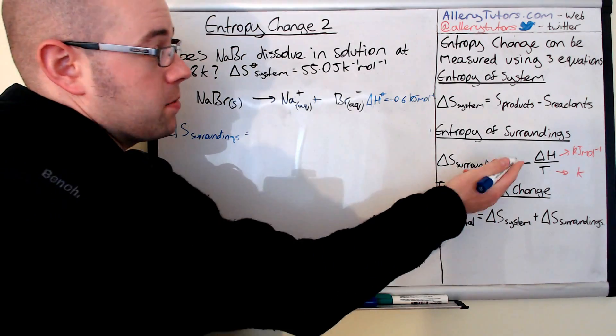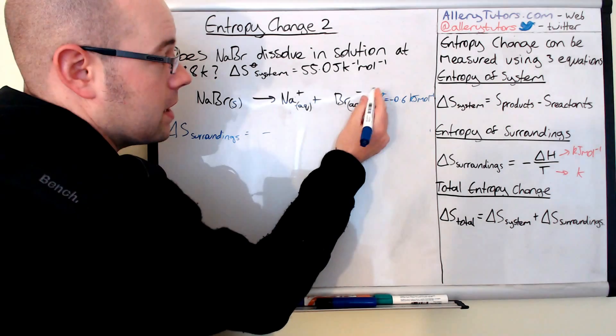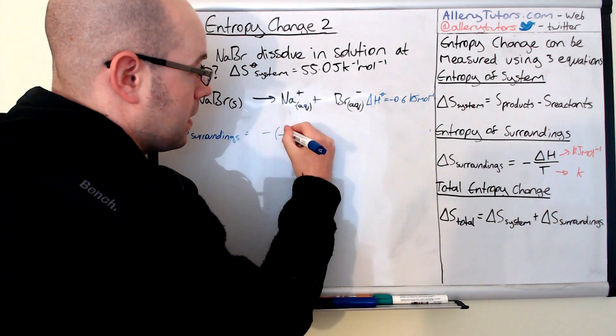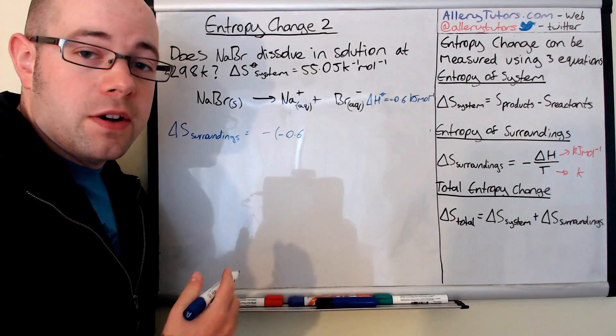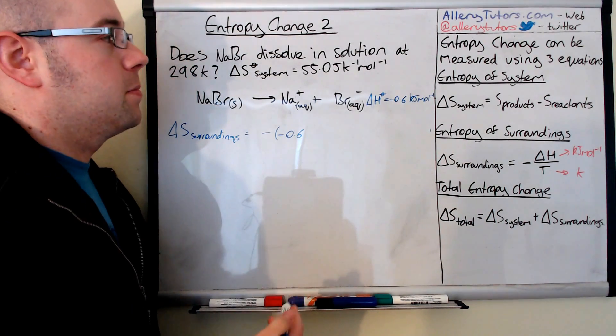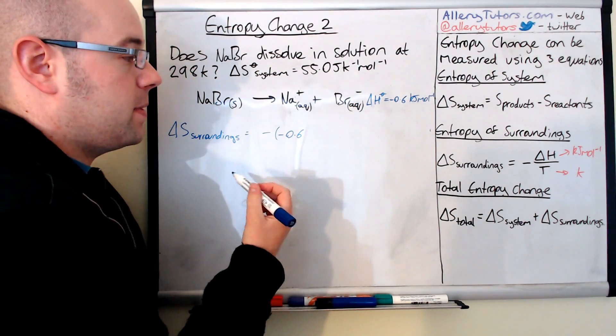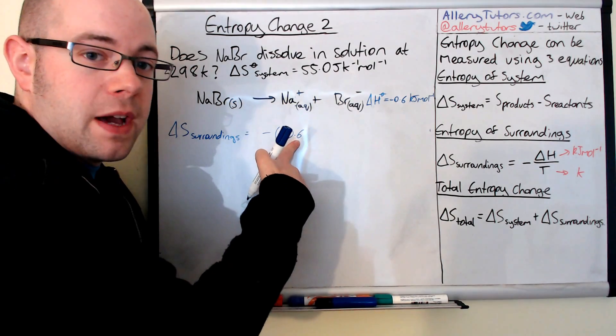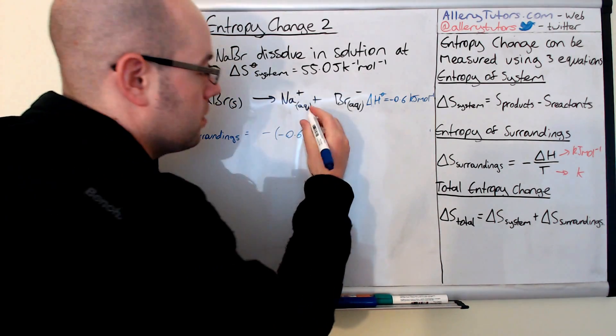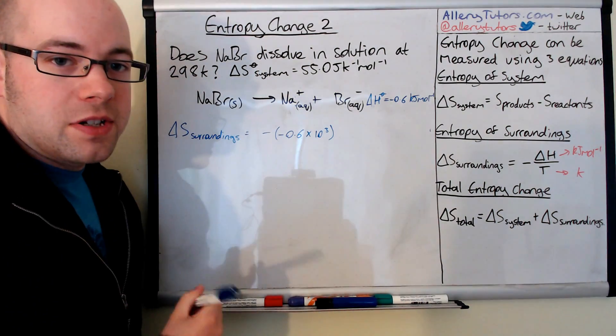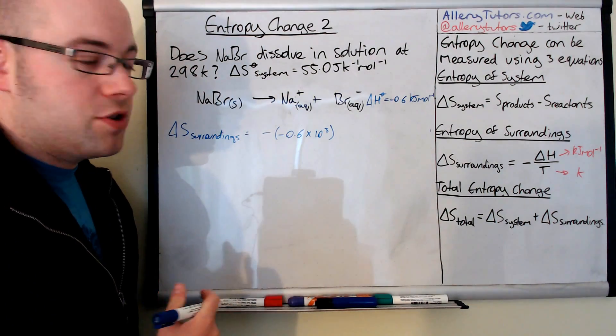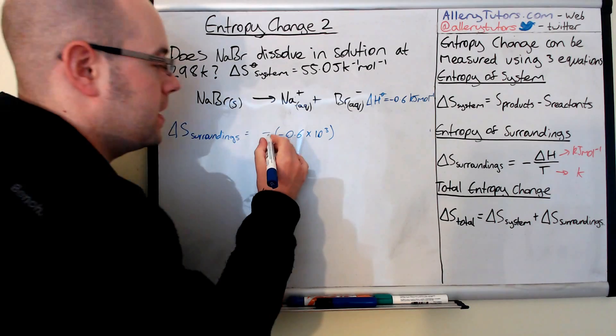That's going to equal minus, and this is delta H, which is minus 0.6. But this is in kilojoules per mole. Now we need to get ours into joules per Kelvin per mole because that's the units for entropy. So we need to multiply this by a thousand to get it into joules. I'm just going to put times by 10 to the 3 on the end there. That tells us we've multiplied it by a thousand to get it into joules. Really important that you do that.